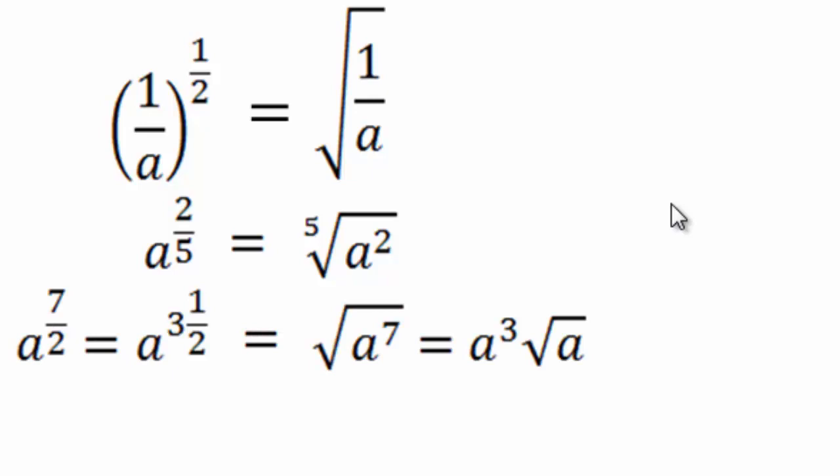So a to the seven-halves. Remember how we said that, seven-halves. The seven is the exponent that stays with the base on the inside in the radicand. And the square root symbol is the base of two. We also saw that we can write seven-halves as a mixed fraction, a to the three-and-a-half, which is a to the third and square root a.